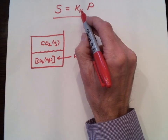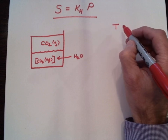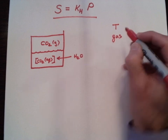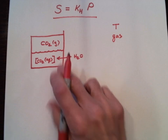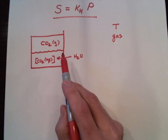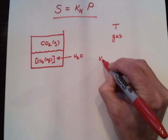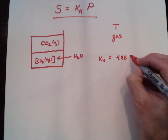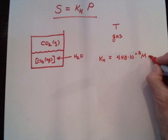The Henry's Law constant is going to depend on a lot of things. For this class, we'll keep temperature constant, but it does depend on temperature. It also depends on the type of gas in the headspace, and of course it depends on the fluid involved. In our class, we'll just deal with water, but we may have different gases. The Henry's Law constant for carbon dioxide in water is 4.48 times 10 to the negative 5th molar per millimeter of mercury.